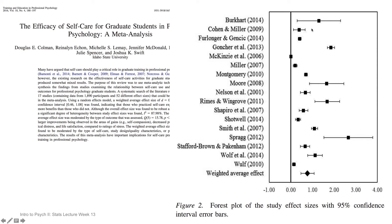Across all of these studies you can see variability in how beneficial self-care was — some studies found it really beneficial, others only slightly beneficial, and one found it wasn't beneficial at all. There are always going to be differences between studies and reasons for those differences. But the benefit of a meta-analysis is that you can see the actual average effect — the weighted average effect down at the bottom — which is essentially a fancy average across all individual studies showing the overall benefit of self-care. The fact that this is quite a bit above the black line shows a moderate to large effect size.